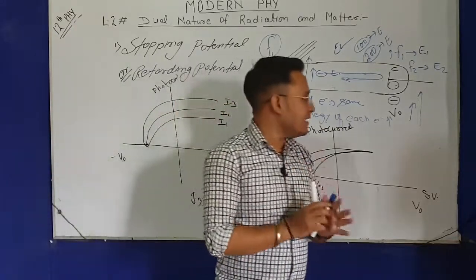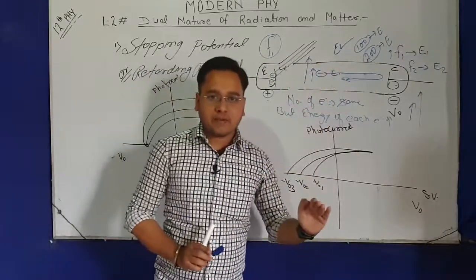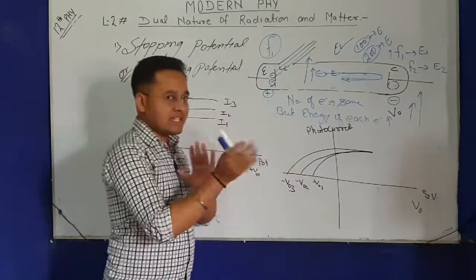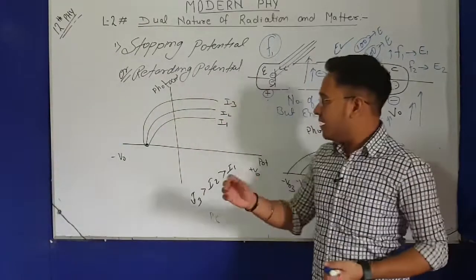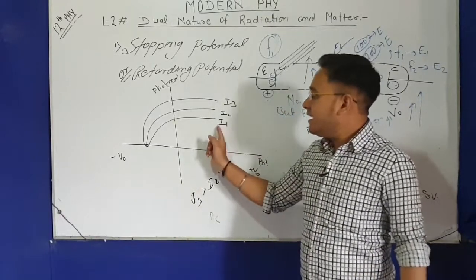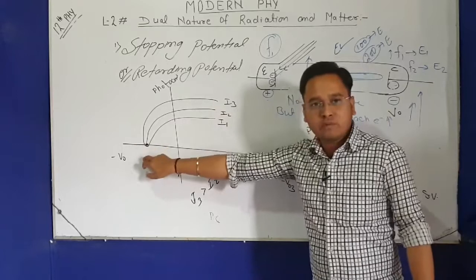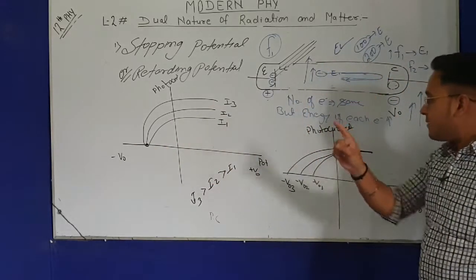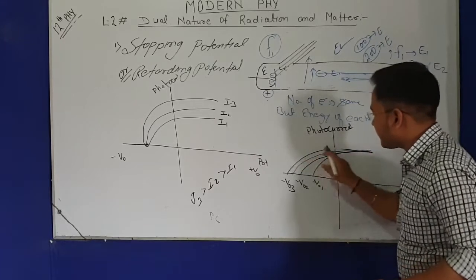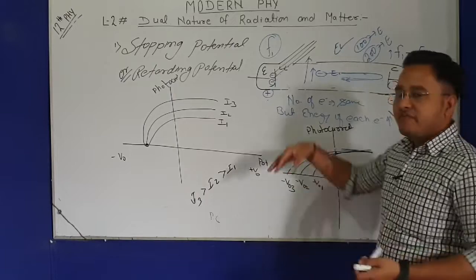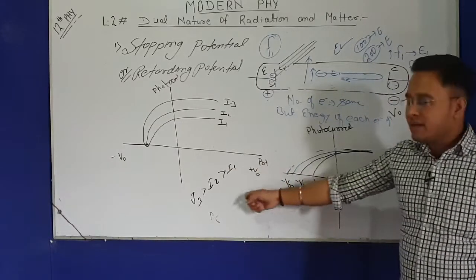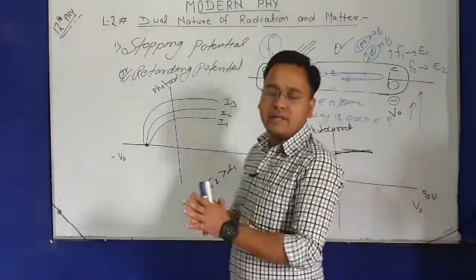Let me repeat the key statement: when frequency is increased, number of electrons remains the same, but energy of photo electrons increases. Therefore stopping potential must also be increased accordingly. From both graphs: increasing intensity → more electrons, same energy, same stopping potential. Increasing frequency → same electrons, more energy, higher stopping potential. Both statements are very important — note them down.